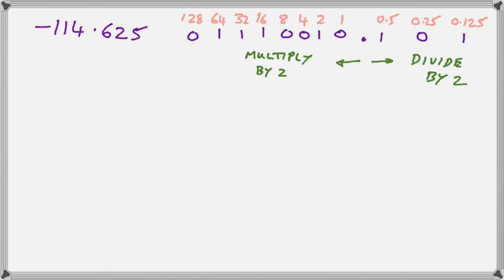So the first thing you have to do if you want to convert negative 114.625 into its binary equivalent is to realize that to the left of the binary point, we multiply by powers of two, and to the right of the binary point, we divide by two. We divide 1 by 2 to get 0.5, then by 2 to get 0.25, and that by 2 again to get 0.125.